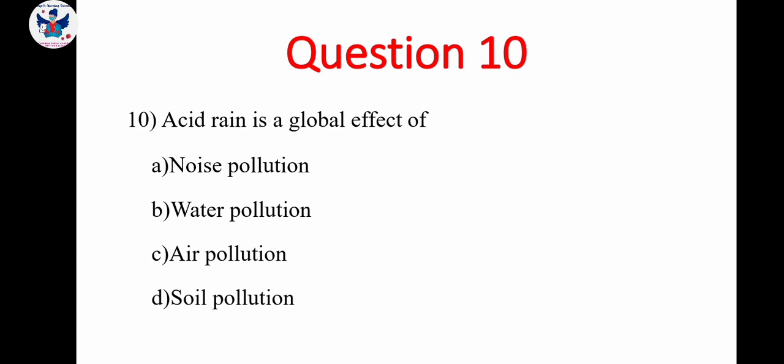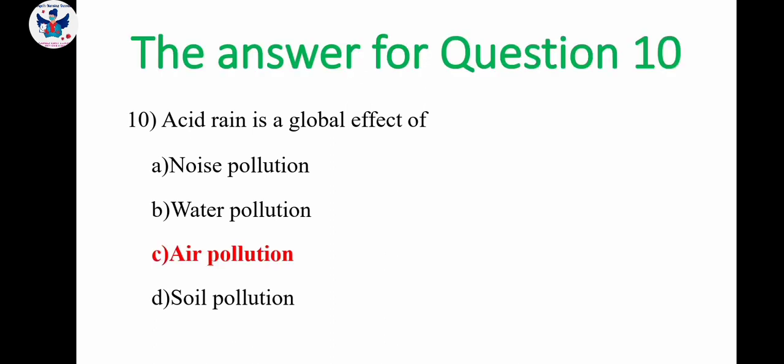Next, question number 10. Acid rain is a global effect of noise pollution, water pollution, air pollution, soil pollution. So the correct answer is air pollution.